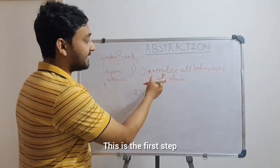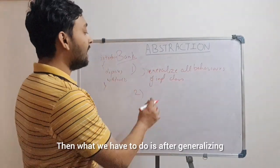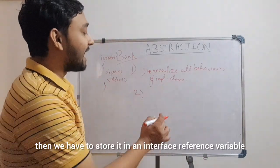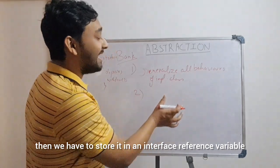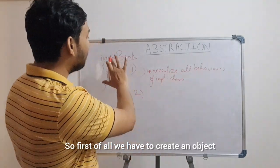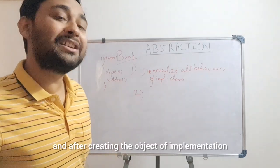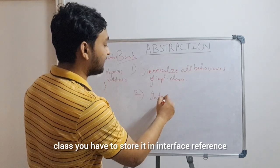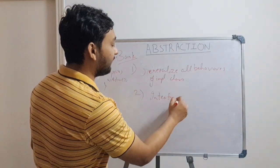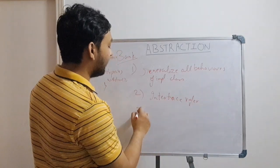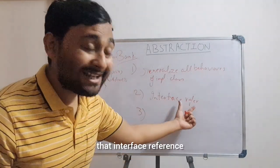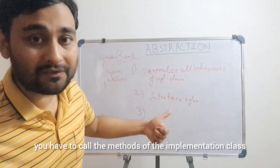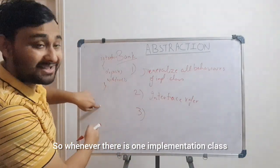The first point to understand is we have to generalize all the behaviors of the implementation class. If there is an interface, there must be some implementation class. If you have a basic understanding of interfaces and classes, you know that if there is an interface, there needs to be an implementation class — otherwise there is no use of the interface alone. So the first point is: generalize all the behaviors of the implementation class. Then what we have to do is store it in an interface reference variable — create an object of the implementation class and store it in an interface reference.